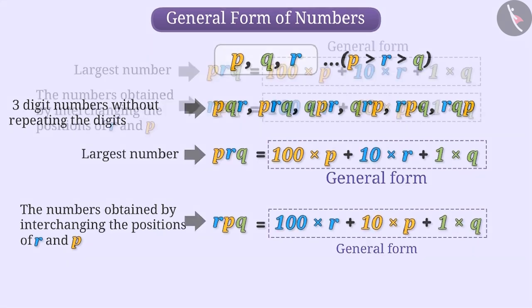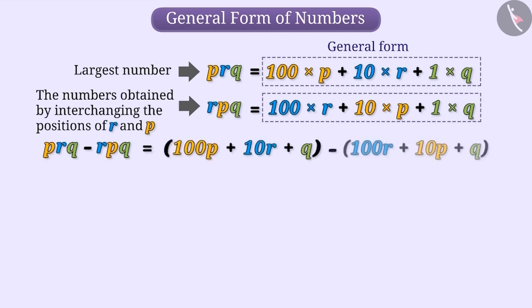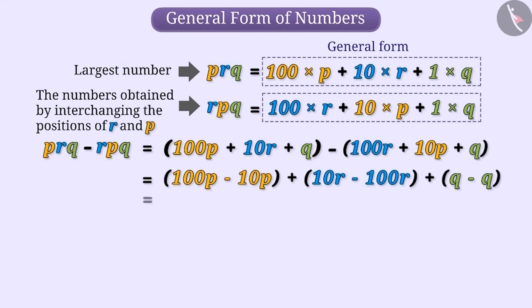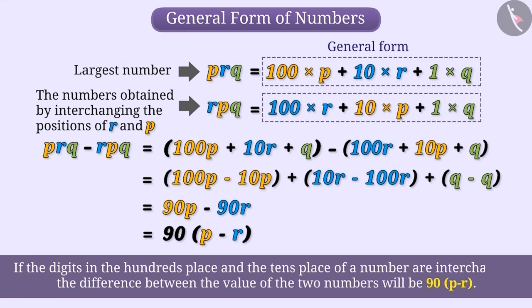To find the difference between these two numbers, we will subtract the smaller number RPQ from the larger number PRQ. We can write PRQ minus RPQ like this. Thus, we get a result 90P minus 90R that is 90(P - R). In this way, if the digit in the hundreds and the tens place in a number are interchanged, the difference in the value of the number will be 90(P - R).